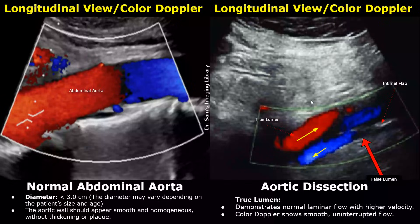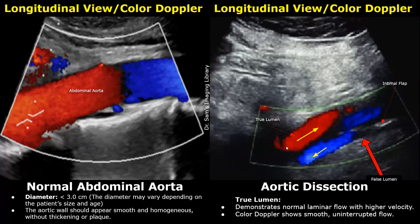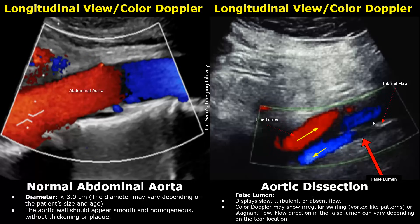Here is how an aortic dissection appears on color Doppler. The true lumen shows normal laminar smooth blood flow. The false lumen may show a swirling pattern, or the flow direction may even be opposite to the normal flow in the true lumen. In the image, you see blue colors, which means blood is moving opposite to the normal blood flow in the true lumen.